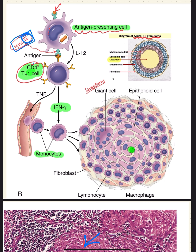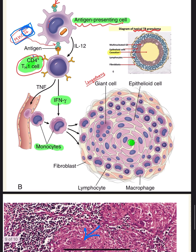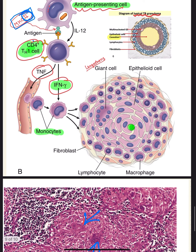The CD4 Th1 helper T cells will get activated and will release cytokines such as tumor necrosis factor and interferon-gamma. The release of these cytokines increases vascular permeability, causing extravasation of monocytes.